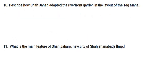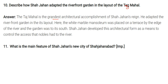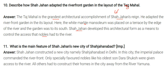Question: Describe how Shah Jahan adapted the riverfront garden in the layout of the Taj Mahal. The Taj Mahal is the grandest architectural accomplishment of Shah Jahan's reign. He adopted the riverfront garden in his layout — the white marble mausoleum was placed on a terrace by the edge of the river, with the garden to its south. Shah Jahan developed this architectural form as a means to control the access that nobles had to the river. In the new city of Shah Jahanabad, the imperial palace commanded the riverfront. Only specially favoured nobles like his eldest son Dara Shikoh were given access to the river; all others had to construct their homes away from the Yamuna.